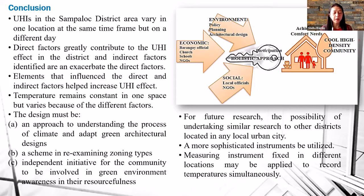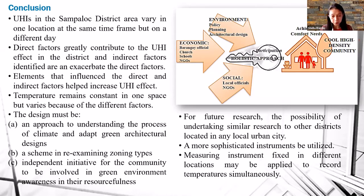For future research, there are no available specific data focused on urban communities to provide a mitigation strategy for UHI effect, so possible research can be undertaken with more sophisticated instruments. A simple inexpensive tool was used in measuring land surface and air temperature, so more advanced equipment is recommended. Also, measuring instruments fixed at different locations are recommended rather than a mobile manner of measurement.